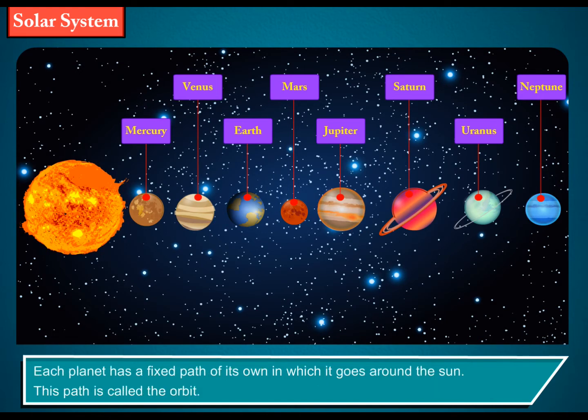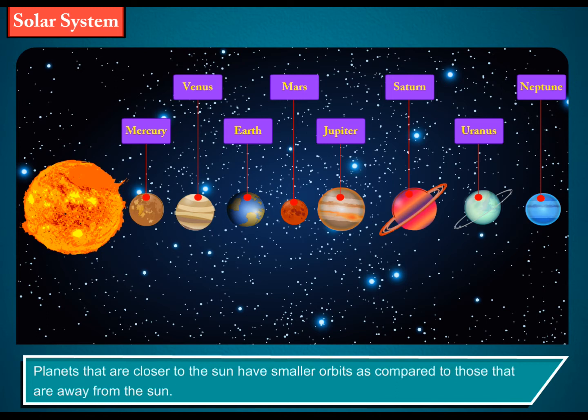Each planet has a fixed path of its own in which it goes around the Sun. This path is called the orbit. Planets that are closer to the Sun have smaller orbits as compared to those that are away from the Sun.